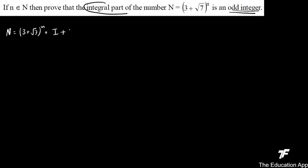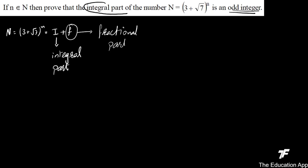Integral part is an odd integer — यह हमें prove करना है। √7 एक irrational number है, तो capital N = (3 + √7)^n को simplify करने पर यह i + f के बराबर आएगा, जहाँ i integral part होता है और f fractional part होता है। Fractional part की value 0 (closed) से 1 (open) के बीच में होती है।